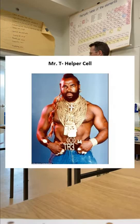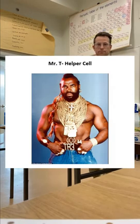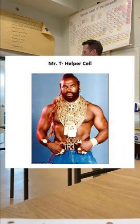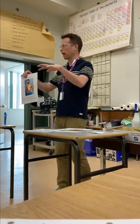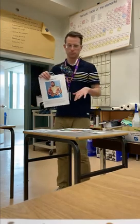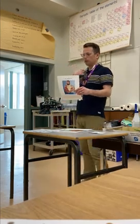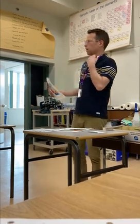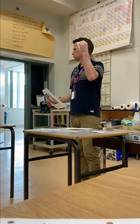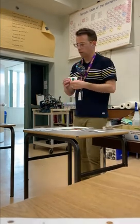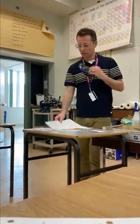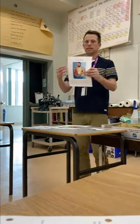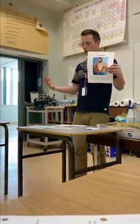The T helper cell is the quarterback of your immune system. The white blood cell comes along to the T helper cell and says, 'You need to look out for this.' The T helper cell then coordinates the attack for our whole body. The first thing it does is signal to our killer T cell that it needs to kill all the things with these antigens.